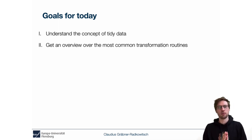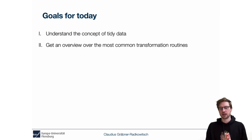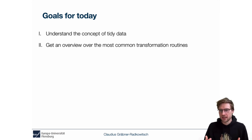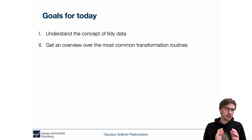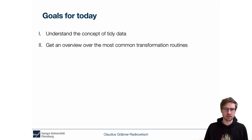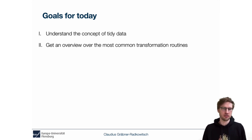We will also get an overview of the most common transformation routines. There are many ways a data set can be messy, but there is only one way a data set can be tidy. The routines we need to apply to make messy data sets tidy are always the same. There are six main transformation routines to learn, and if you can implement them in R, you will probably be able to handle 90% of all transformation challenges in the real world. The last 10% become easy because you can simply google them.